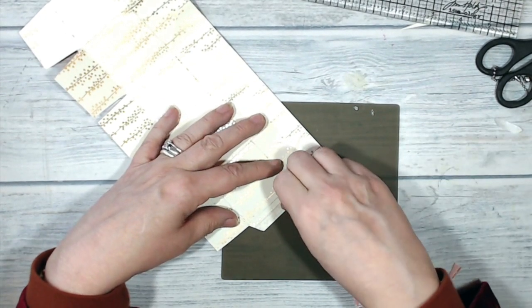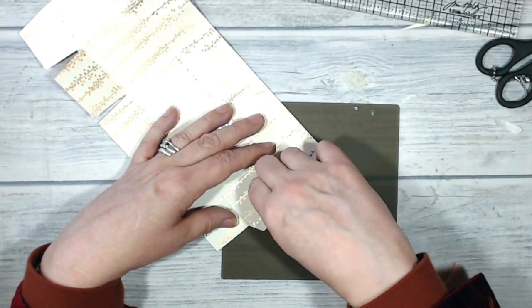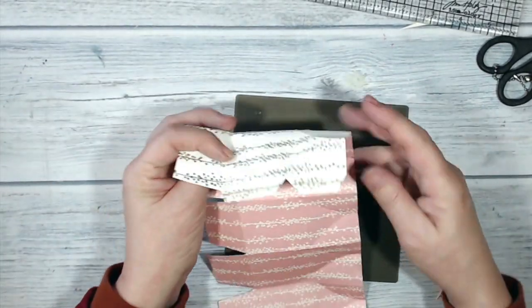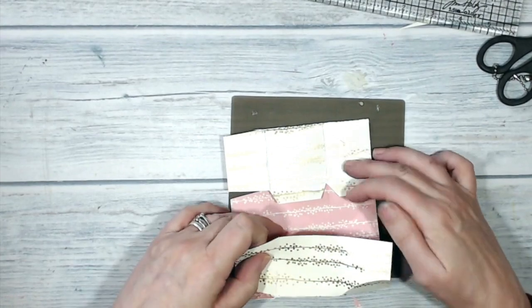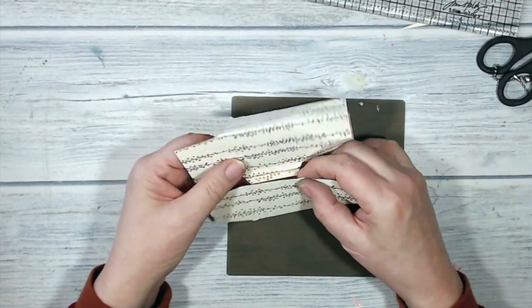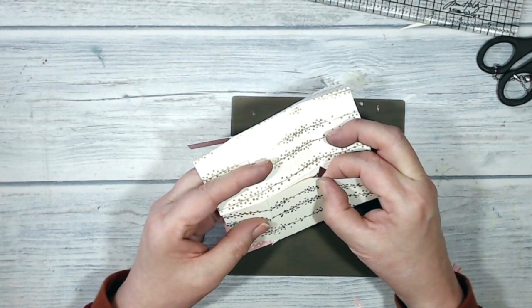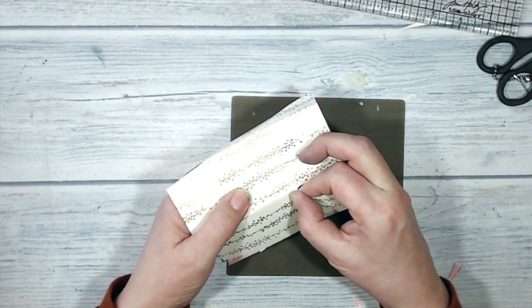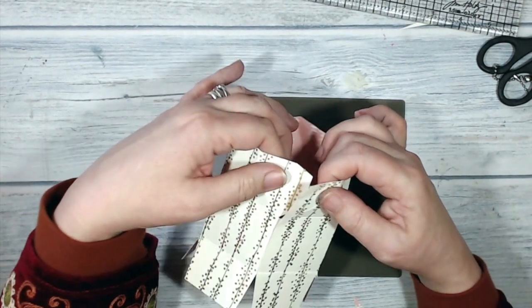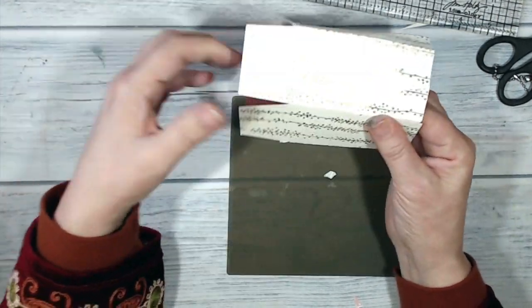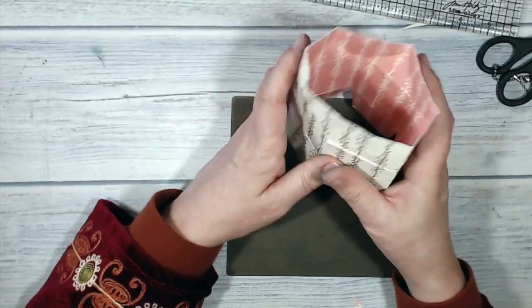It doesn't really matter because this is a five-pointed box. It won't store flat. If you made a four-petal or a six-petal box, then it would. This is a five-pointed star, so once you reach this point, the box is going to be in its 3D format.